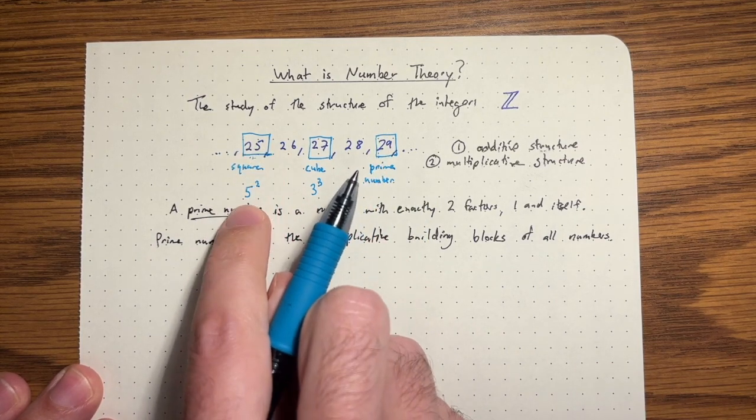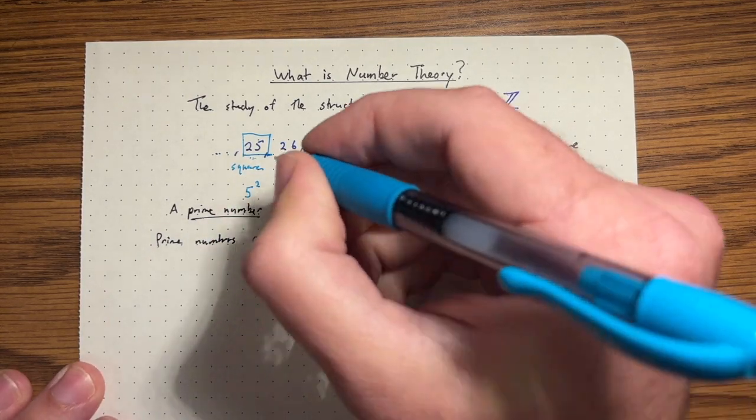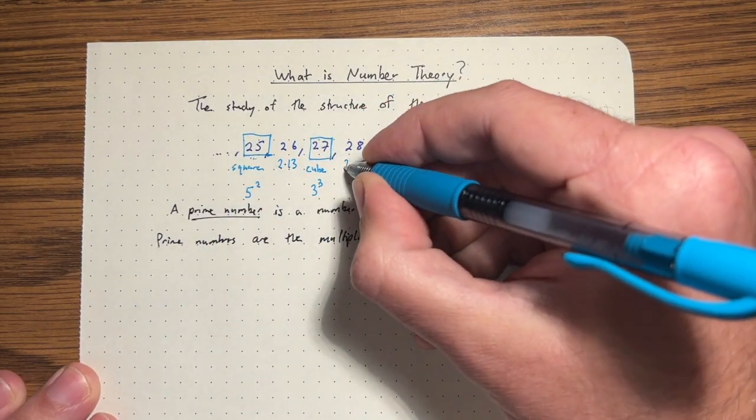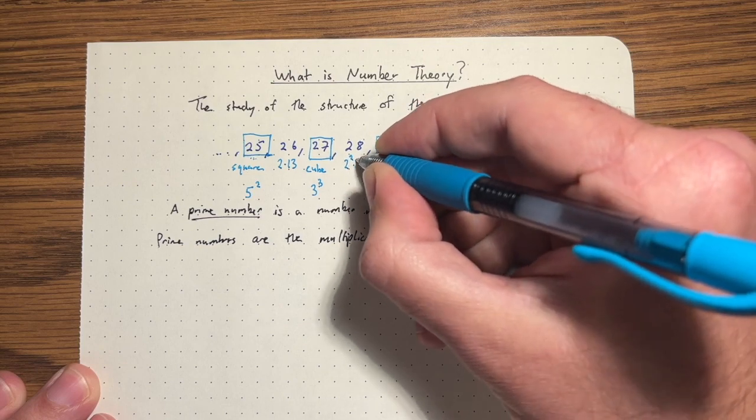25 is a square of a prime, 5. 26 would be 2 times 13. These are primes. 28 would be 2 times 2 times, so 2 squared times 7.